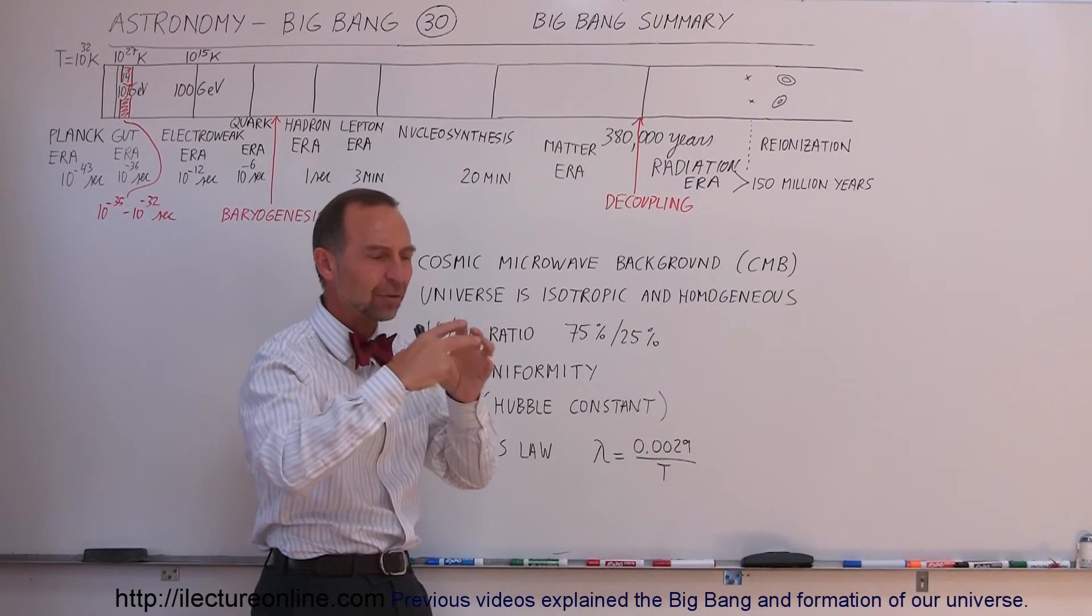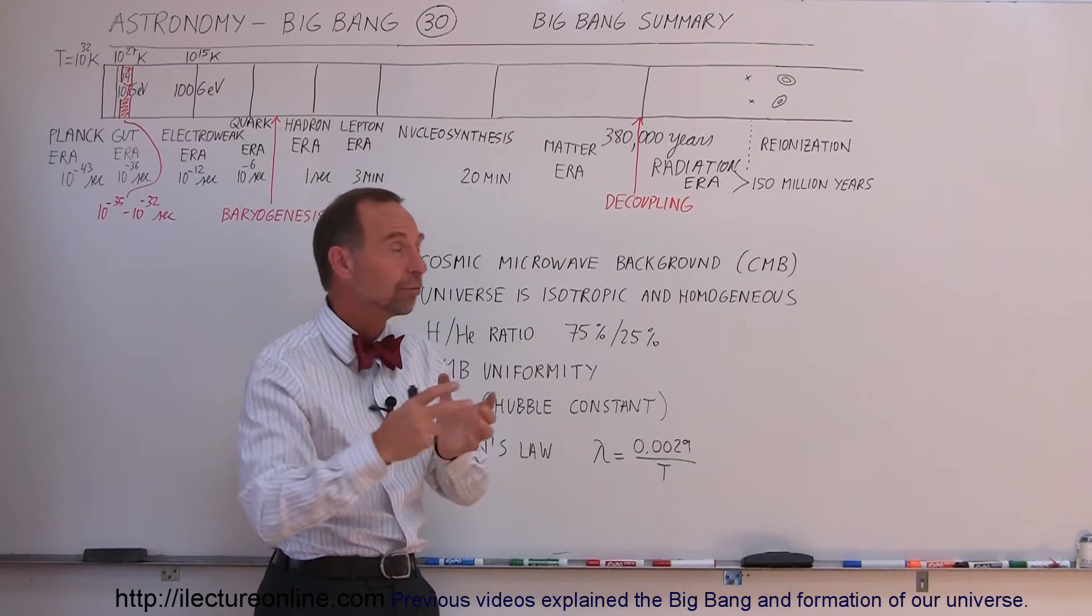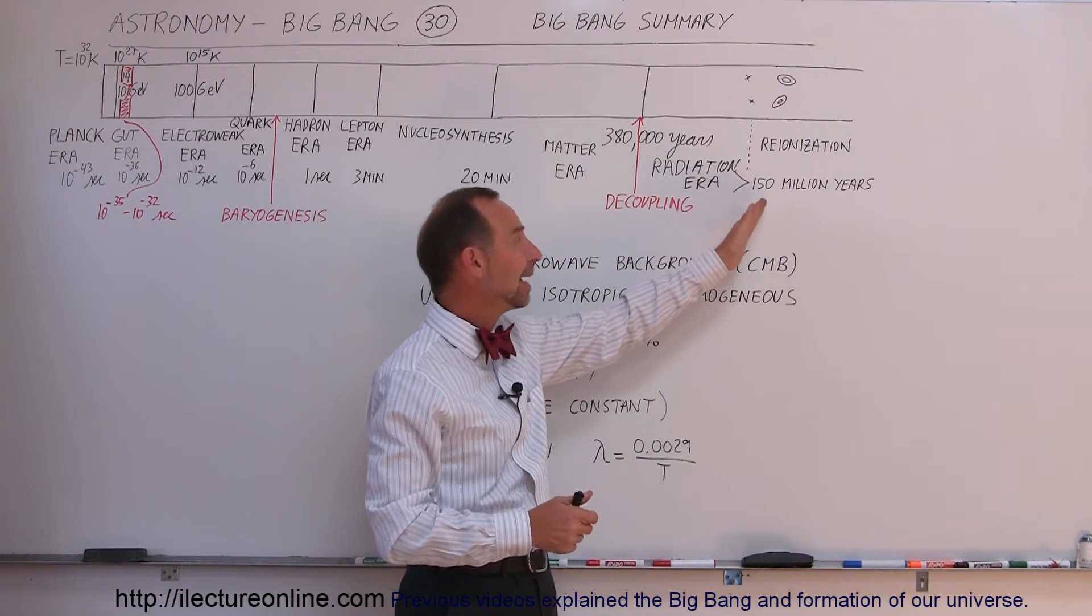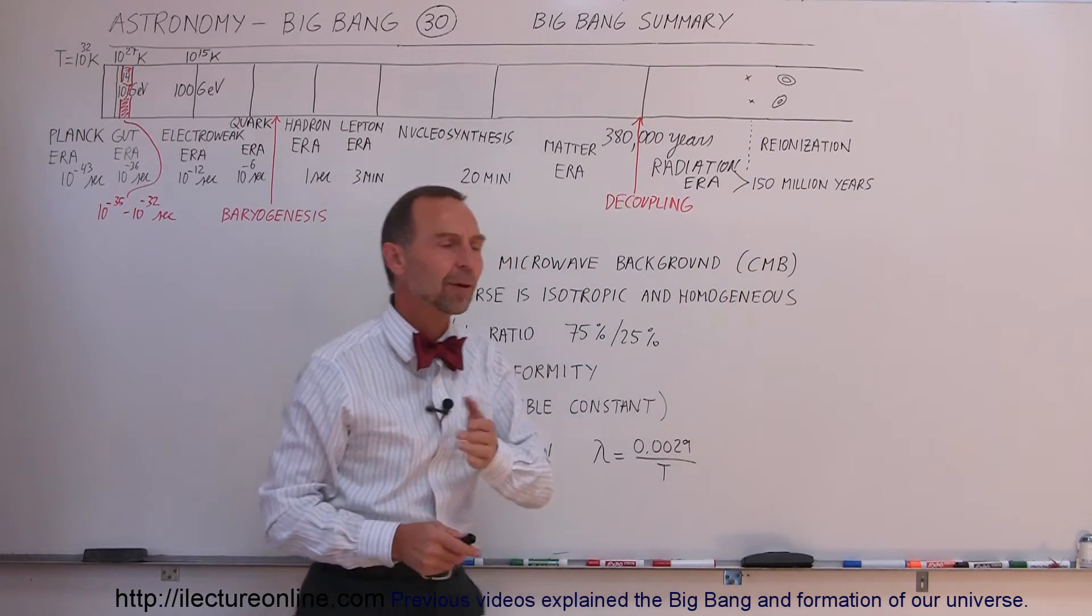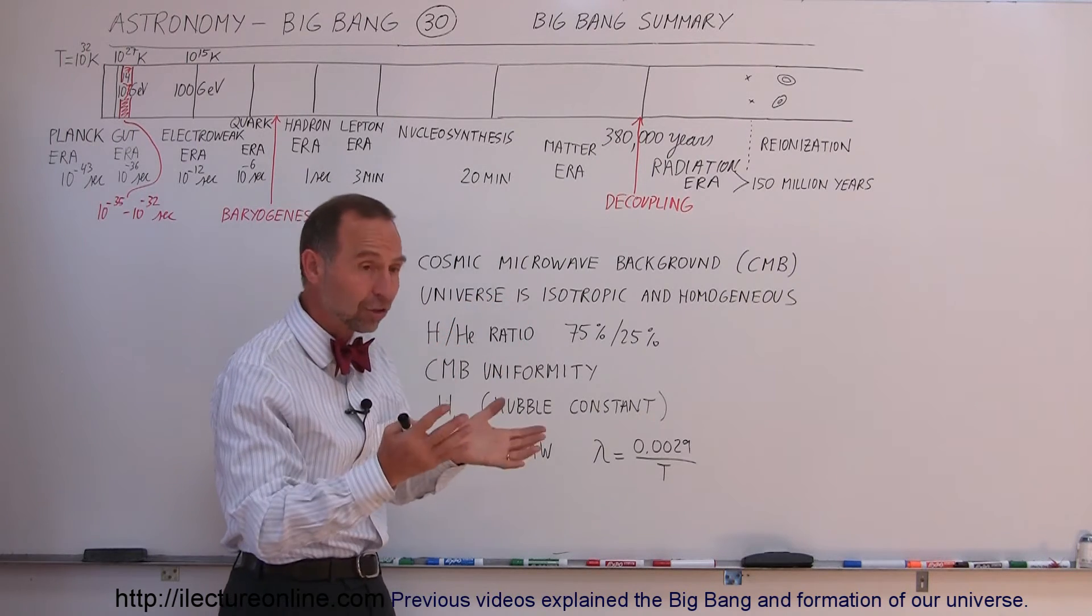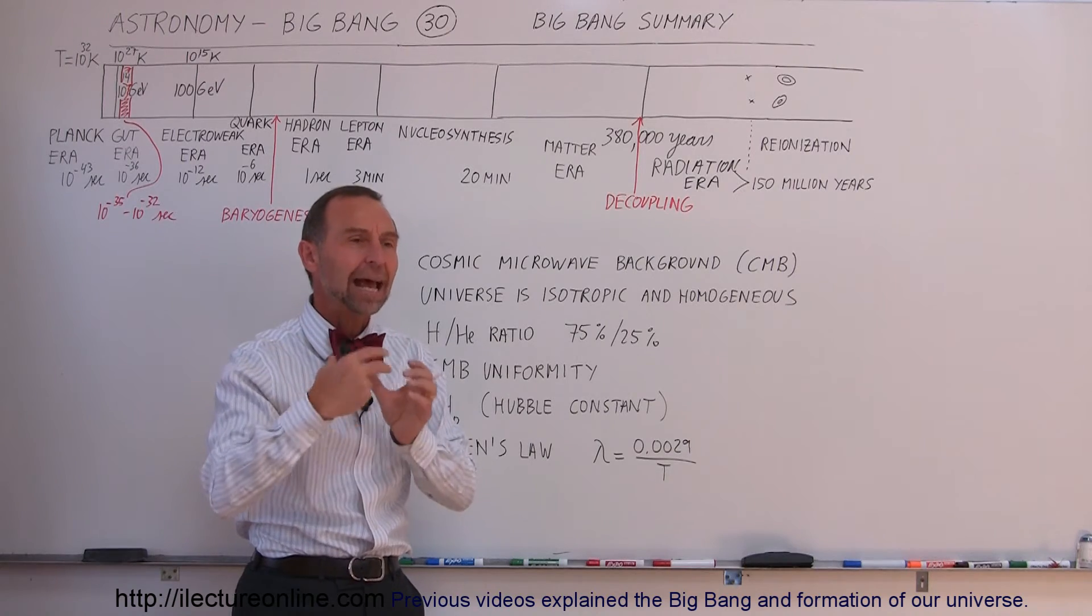But at least push things together with gravity into dense enough regions where stars could begin to form and where galaxies could begin to form. So we feel that somewhere between 150 and maybe 300-400 million years after the Big Bang, stars began to form, galaxies began to form, global clusters began to form, and that's where the Universe began to take on the structure that it has today.